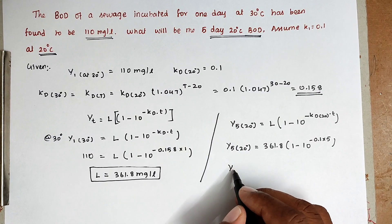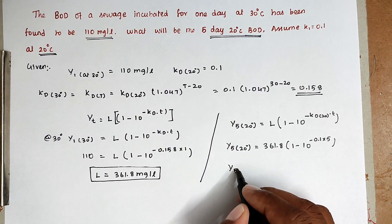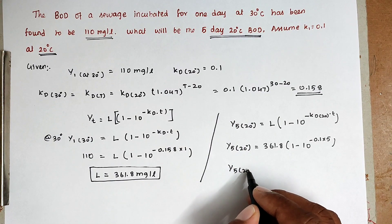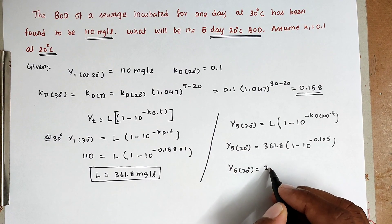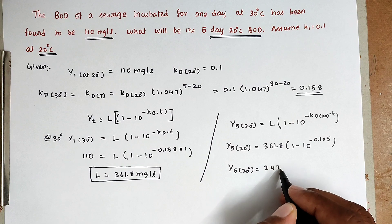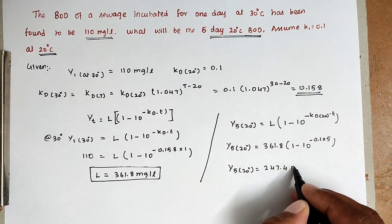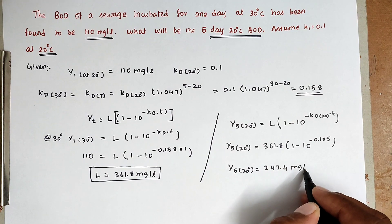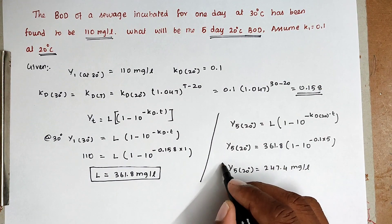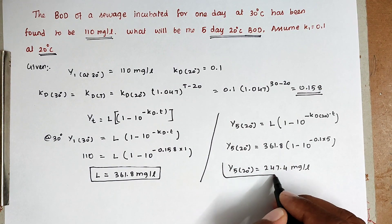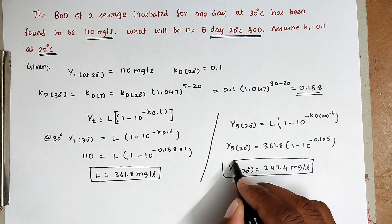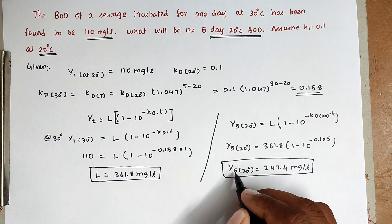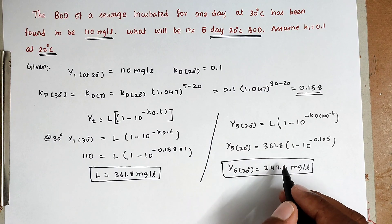Solving this, we get the value of Y for 5 days at 20 degree Celsius equal to 247.4 milligram per liter. This is the BOD they are asking for in the question — the 5-day BOD at 20 degree Celsius.